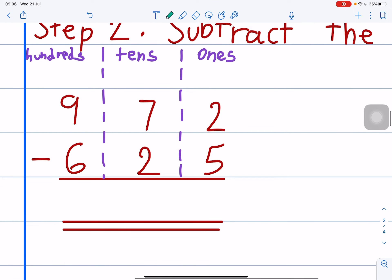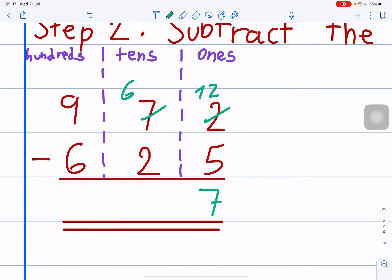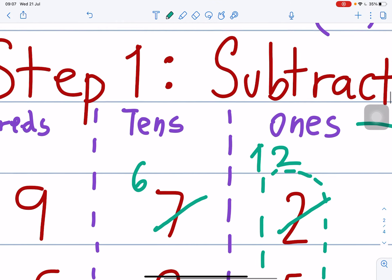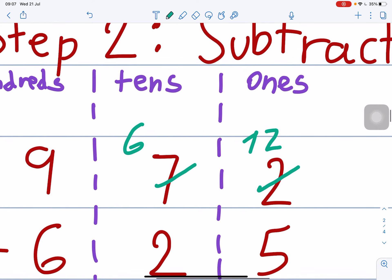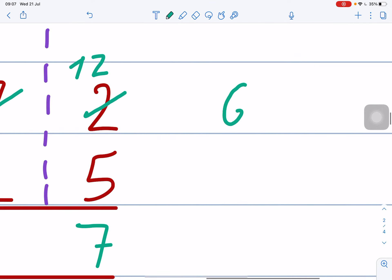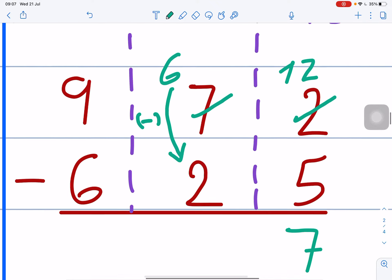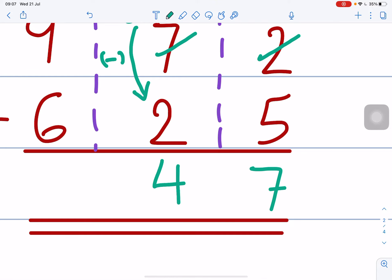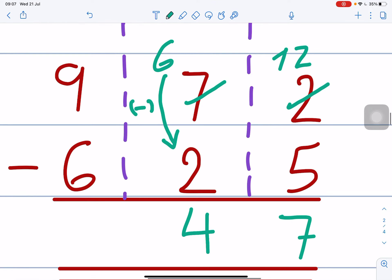Let's do step 2. Step 2. Step 2, like this. And then, 12. Okay. Step 2 now. Here. Step 2. Here. Place value, tens. 6 minus 2. Right? So, 6 minus 2 is equals to 6, 5, 4. 4. You write 4. Step 2, finished.